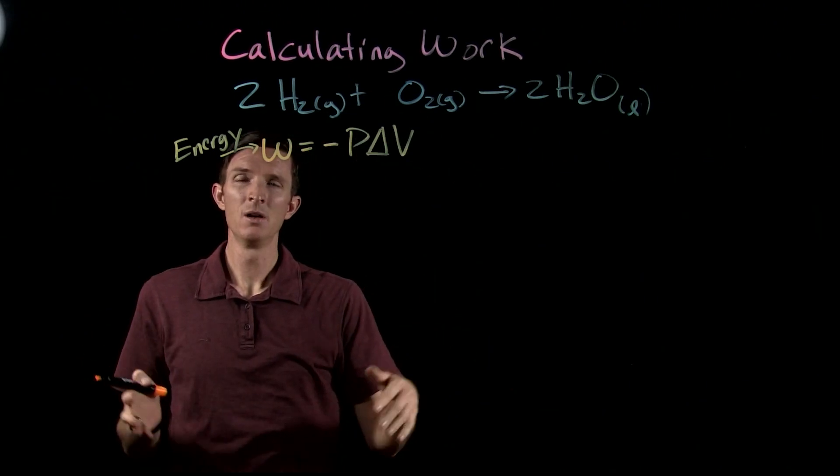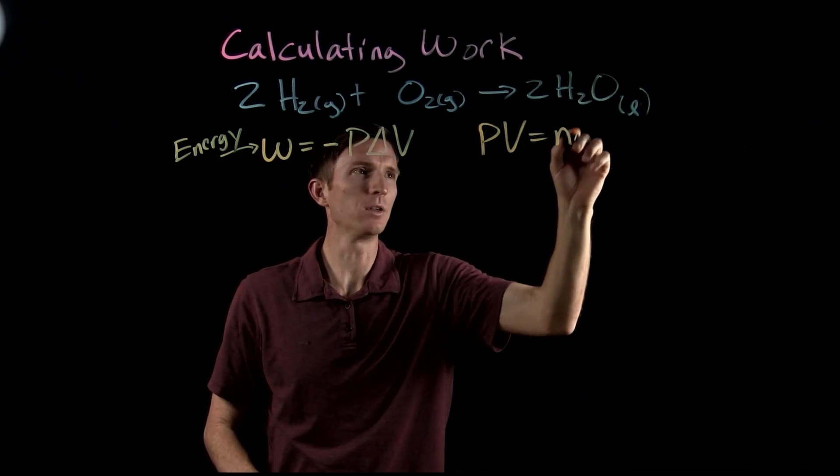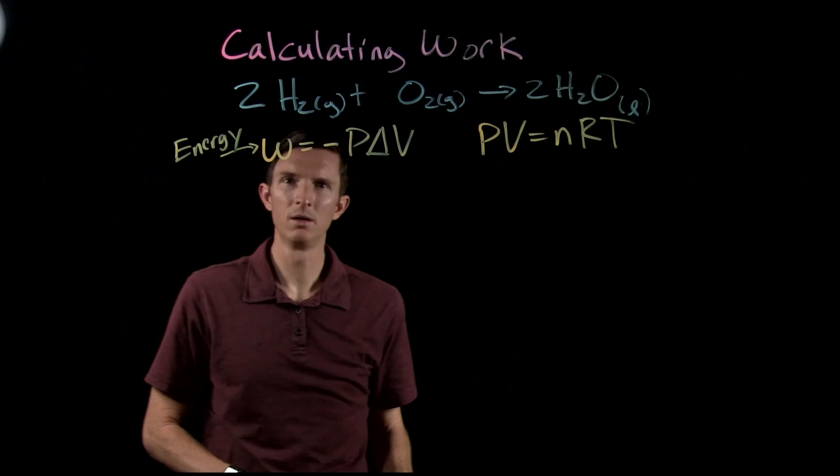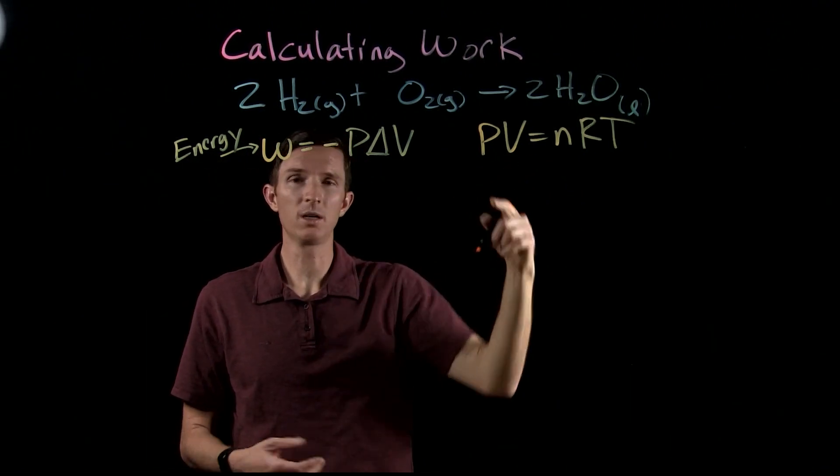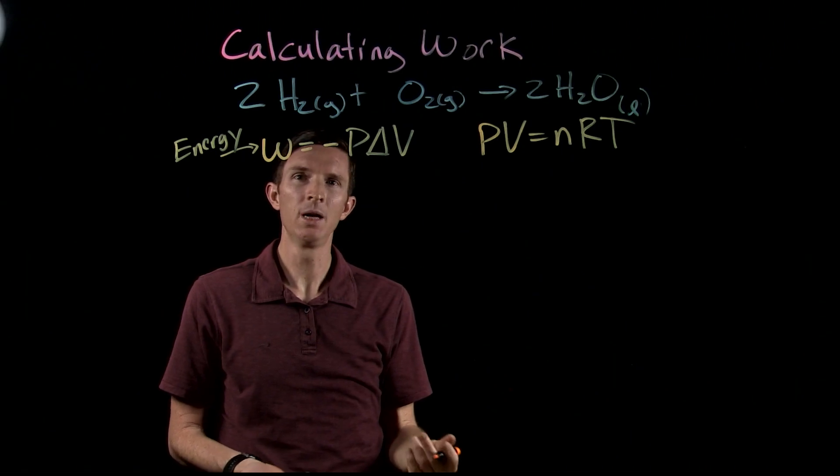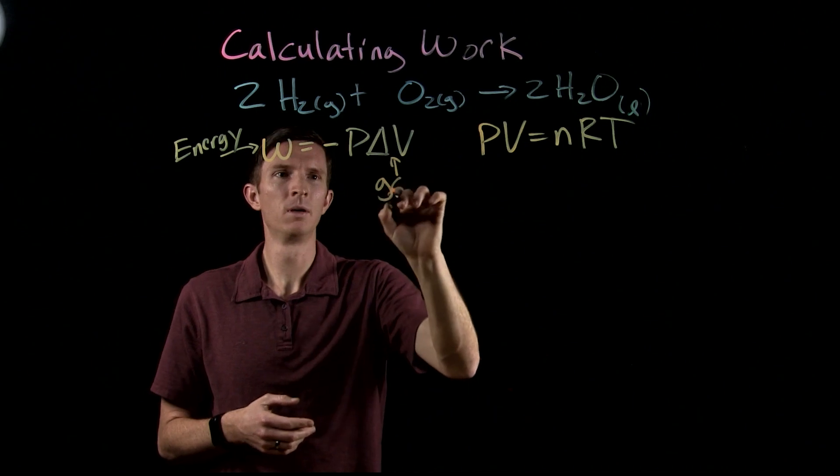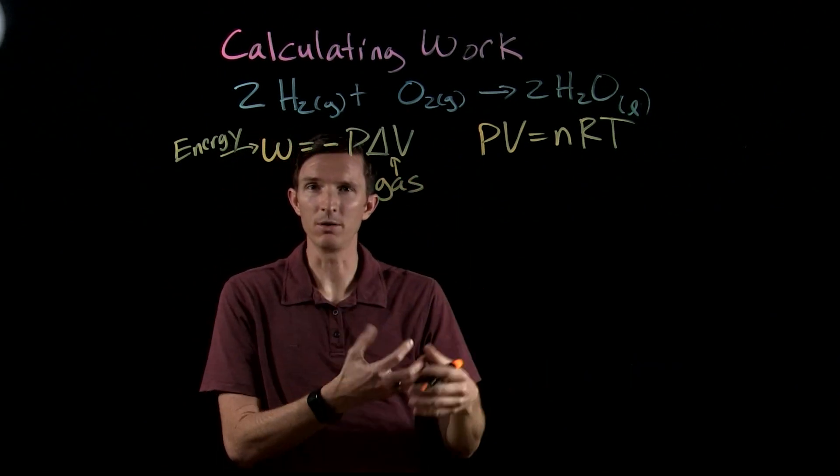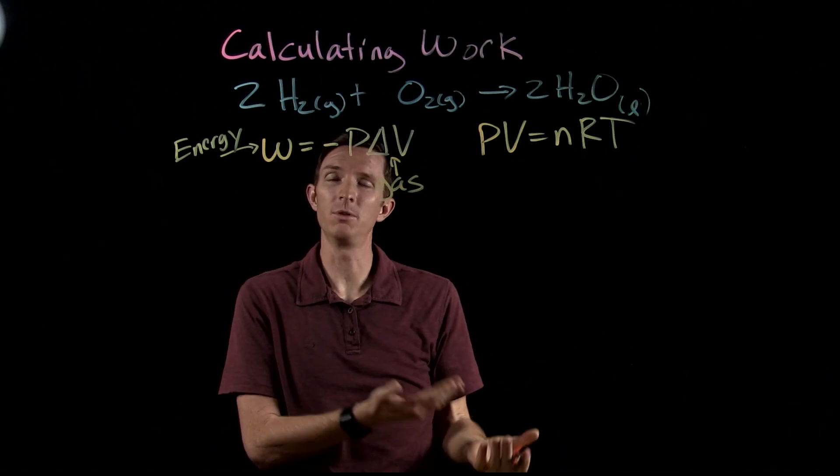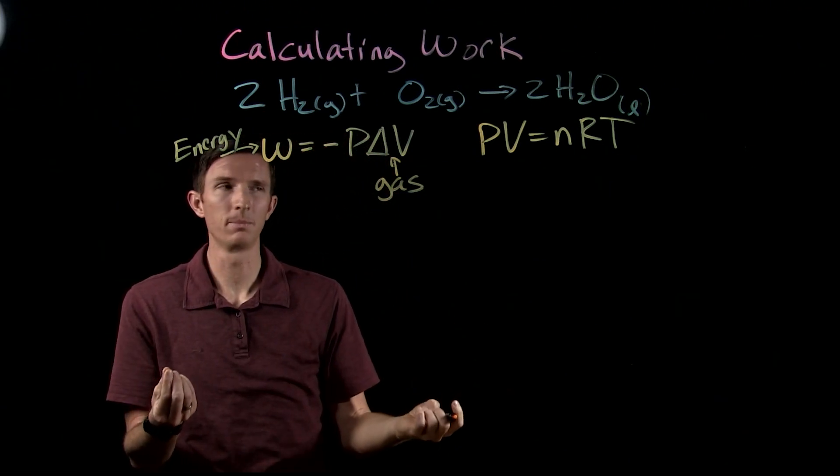But if we're thinking about a gas, if you go back to the ideal gas law, PV equals NRT, well, if you're at constant pressure and you double the number of moles, that's going to double your volume. And so we see that what's going to cause the greatest amount of change in volume? Number of moles of gas. That's going to cause our volume to change drastically compared to maybe a liquid or solid.